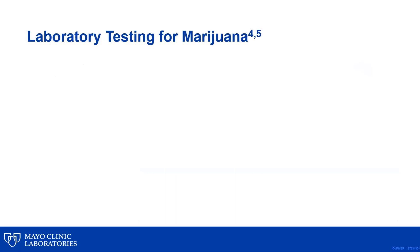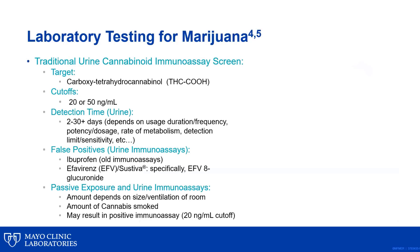Laboratory testing for marijuana: urine testing is commonly used to detect marijuana use. Cannabinoid immunoassay methods typically use an antibody directed against one of the metabolites of THC, known as carboxytetrahydrocannabinol, or carboxy THC. These commercial immunoassays offer cutoffs of 20 or 50 nanograms per ml. Depending on the frequency of marijuana usage, its potency or THC content, the detection limit of the laboratory assay, and other factors, you can still get positive results or detect the carboxy THC in the urine 30 days or longer once a person stops using marijuana.